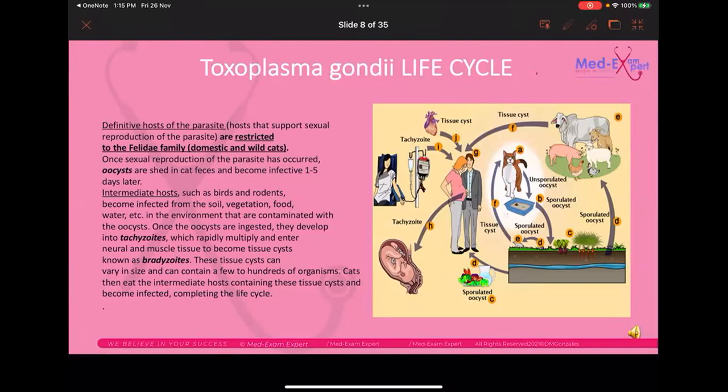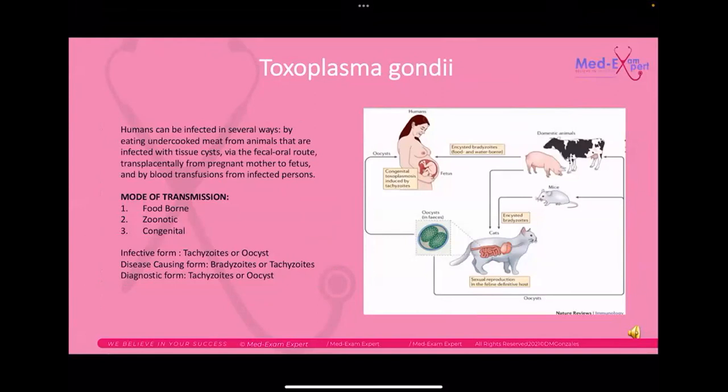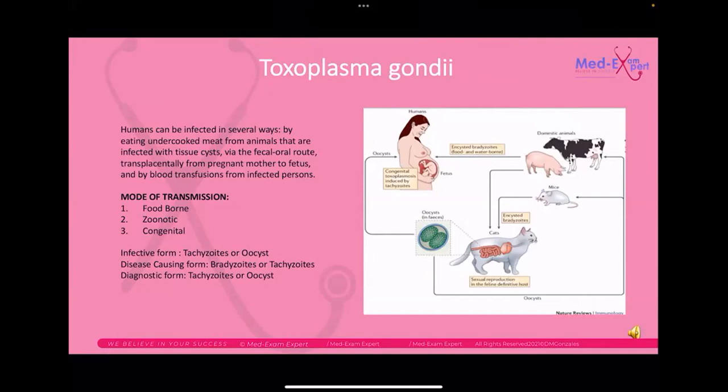Through blood transfusion, the form transmitted is the tachyzoite. So, modes of transmission include foodborne, zoonotic, or congenital. Humans can be infected by eating undercooked meat with tissue cysts, by the fecal-oral route, transplacentally from mother to fetus, or by blood transfusion from an infected person.